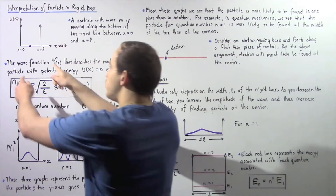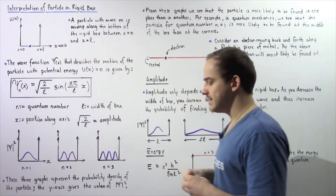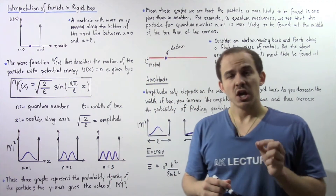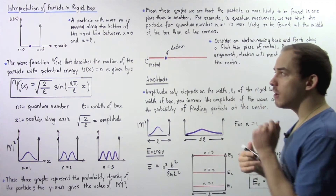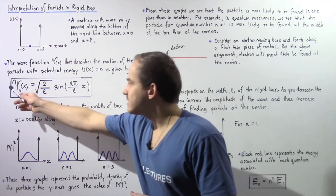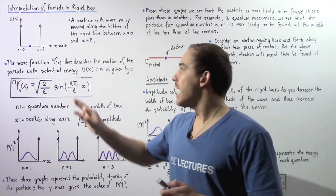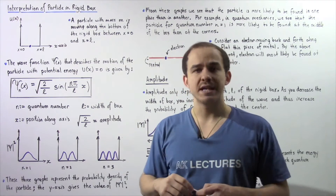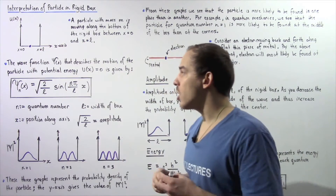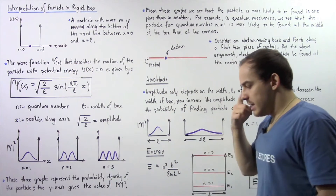At any point between the two corners of the box, the potential energy of our particle is zero. The wave function psi of x that represents the motion and behavior of that particle is given by: psi of x equals the square root of 2 divided by L, multiplied by sine of pi times n divided by L times x. This wave function describes the wave produced by our free particle.